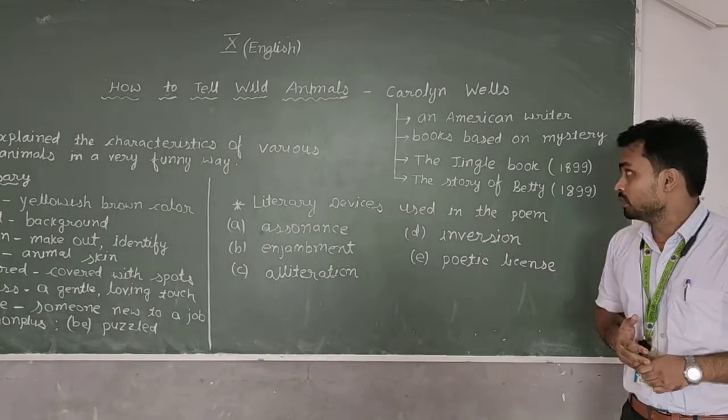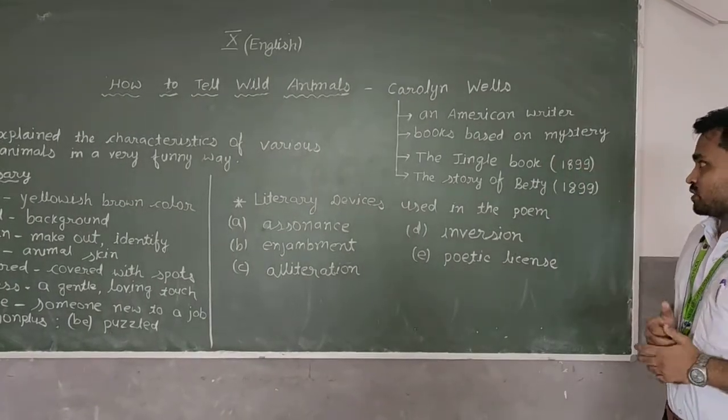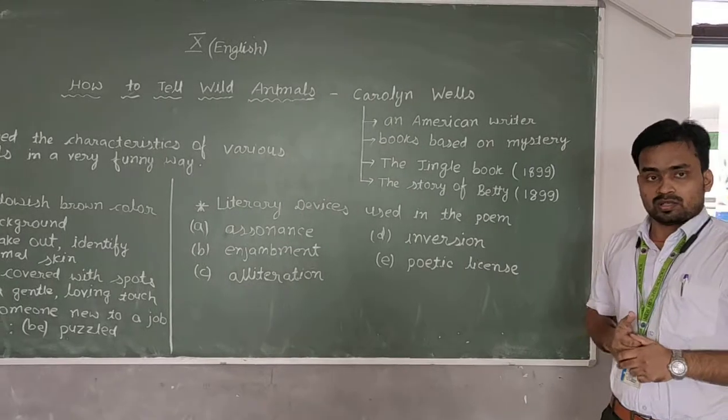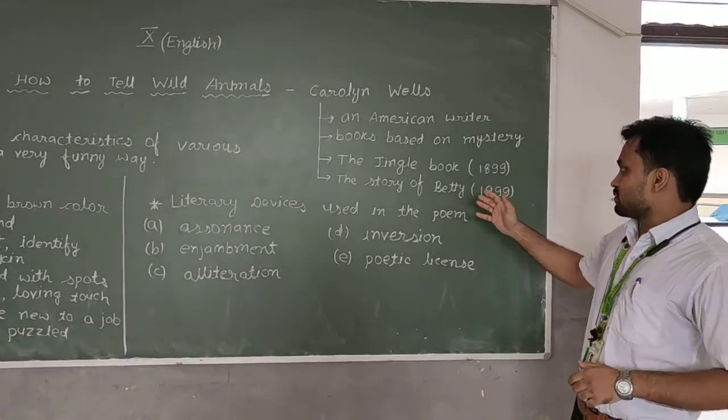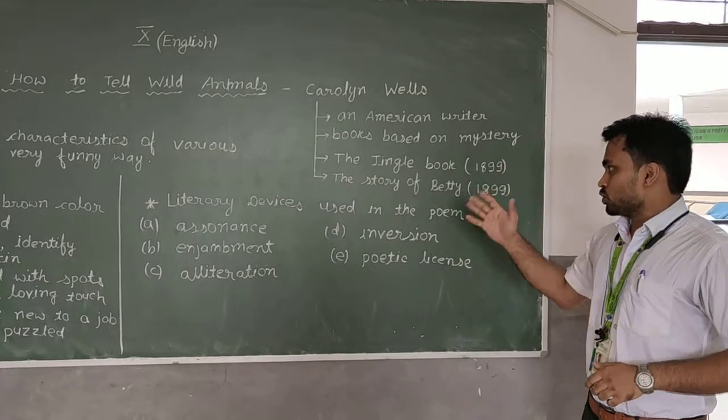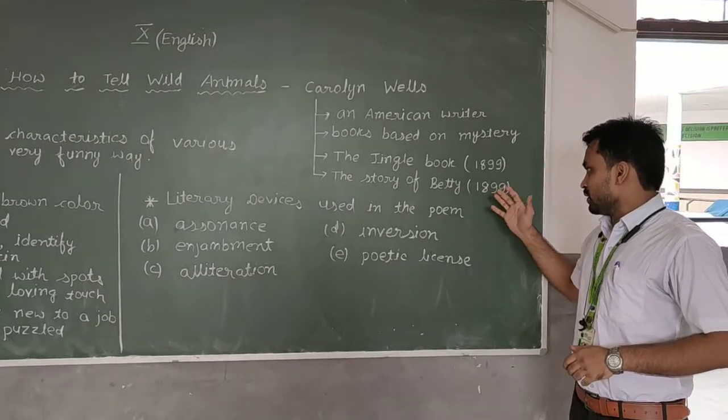Carolyn Wells is an American writer who has written books based on history. Some of the different books written by Carolyn Wells are The Jingle Book, written in 1899, and The Story of Betty in the year 1899.